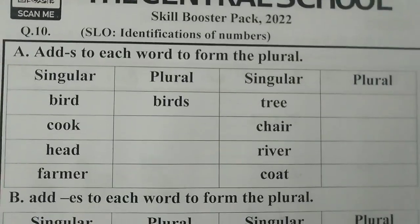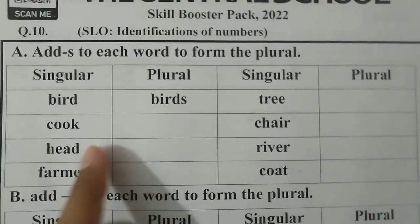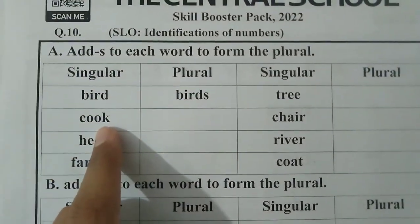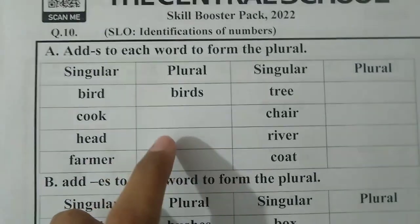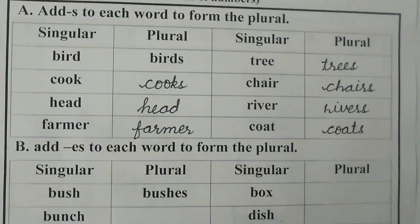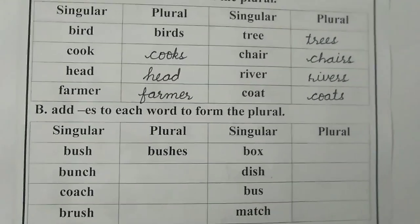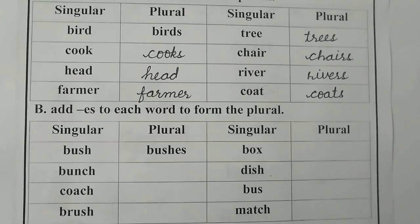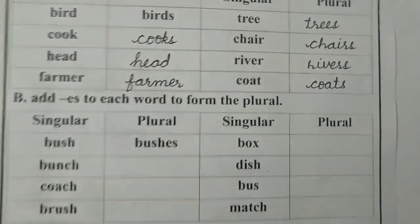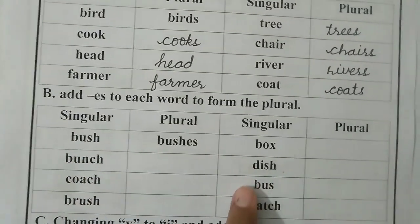Part A is to add S to each word to form the plural. Bird — birds. Cook — cooks. Head — heads. Write in the given column. Part B is to add ES to each word to form the plural. We will add ES to make these words plural. Like: bush — bushes, bunch — bunches.